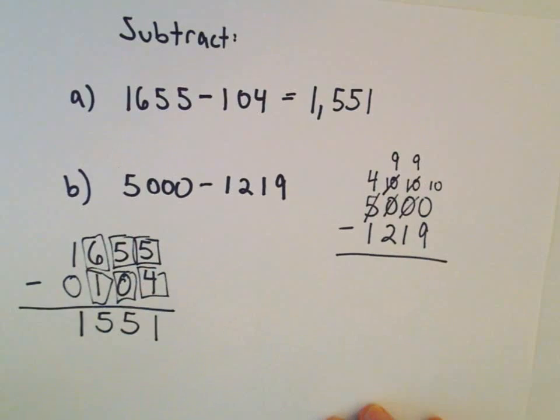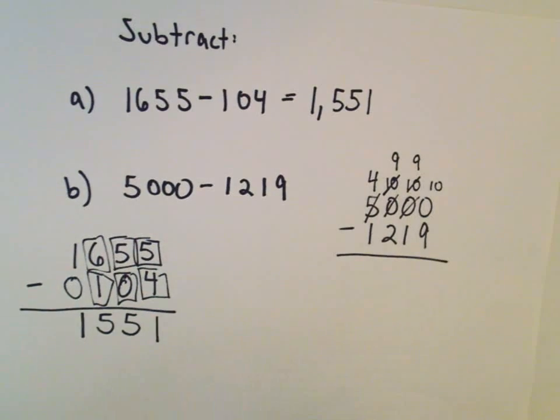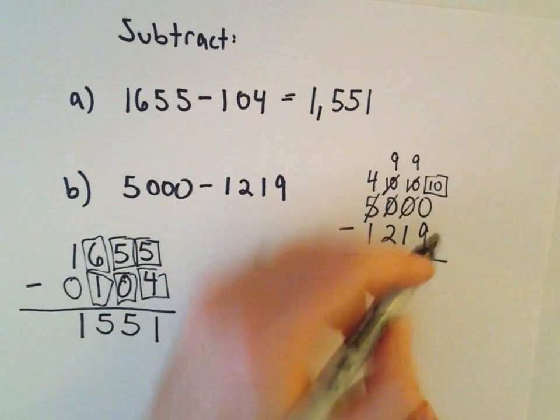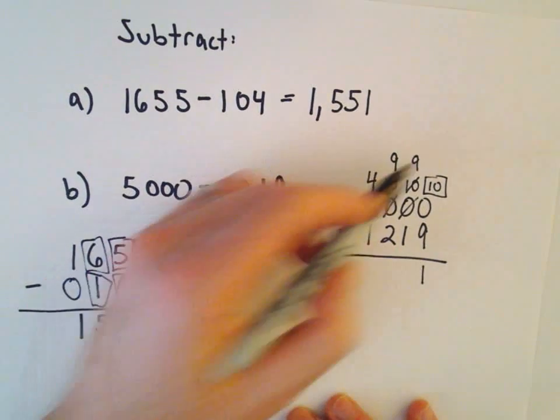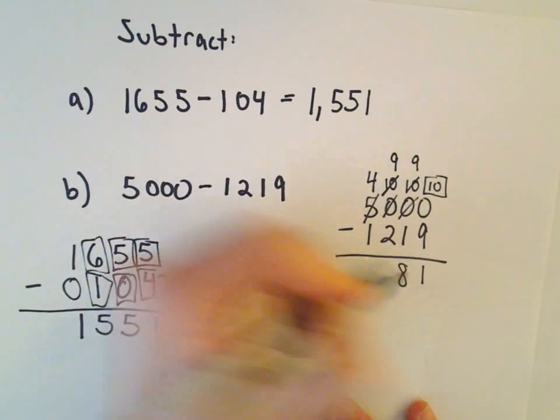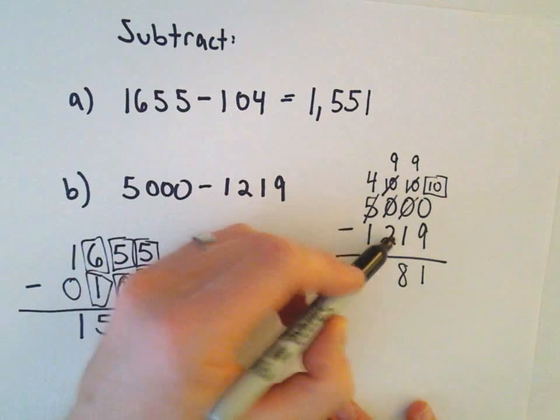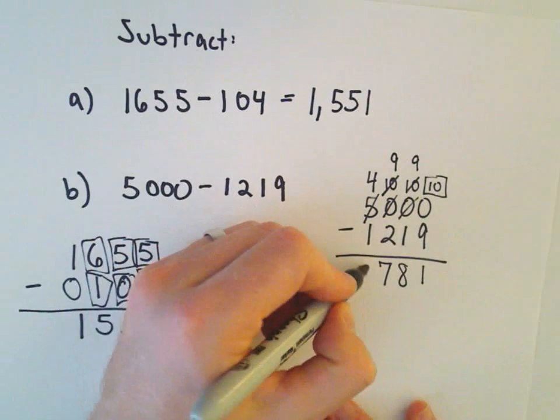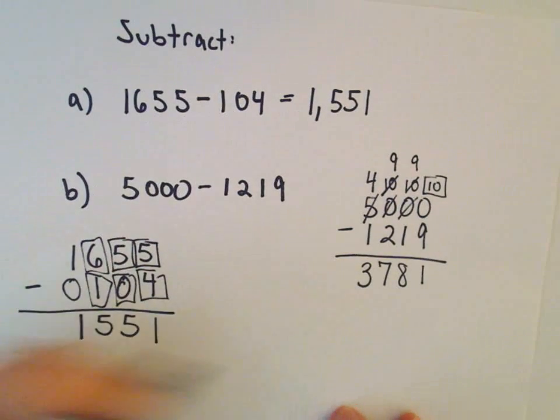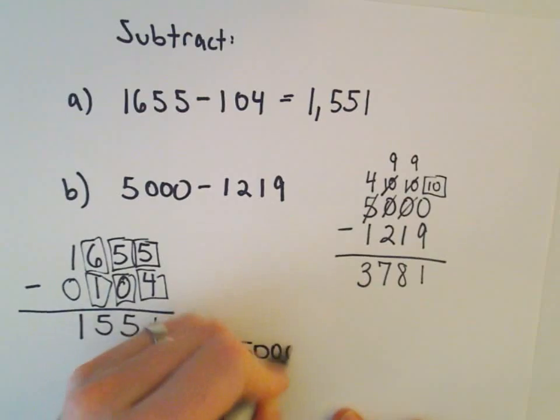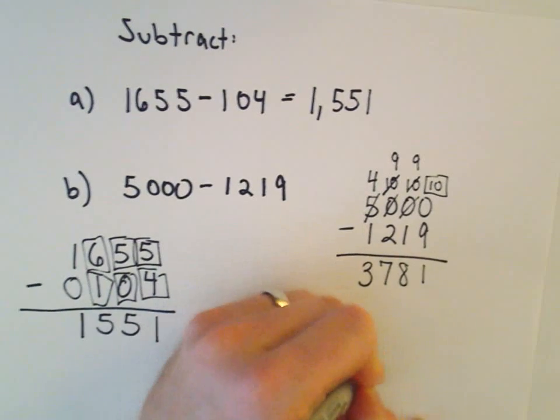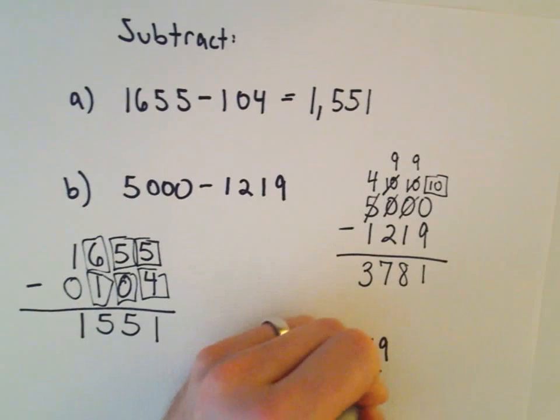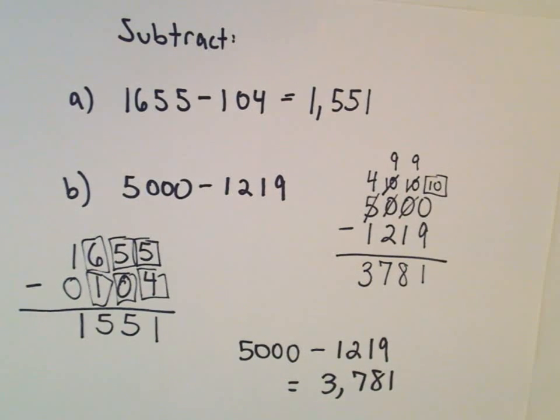So we've got 10 minus 9. That's going to leave us with 1. We have 9 minus 1. That'll leave us with 8. 9 minus 2 is going to leave us with 7. And then 4 minus 1 is going to leave us with 3. And now we've got our solution. So 5,000 minus 1,219 is going to equal 3,781.